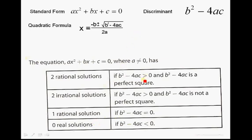And likewise, if it's greater than zero, and if it's a perfect square, remember perfect squares are 4, 16, 36, 49, then there are two rational solutions. And then two irrational solutions if it's greater than zero and not a perfect square.